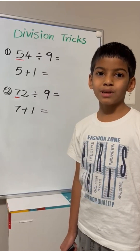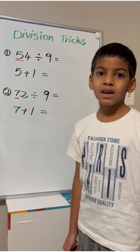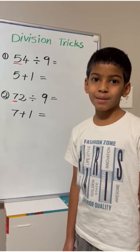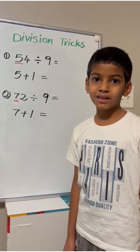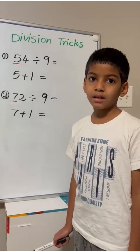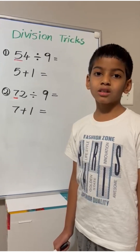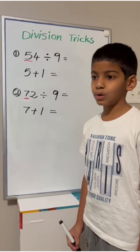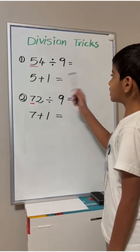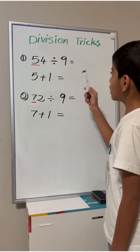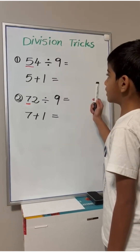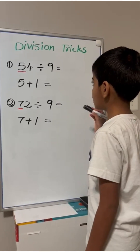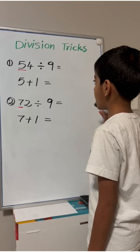Today, we're going to be learning how any two-digit multiple of 9 can be divided by 9 using a smart trick. For our first example, we are going to do 54 divided by 9. 54 is a multiple of 9.